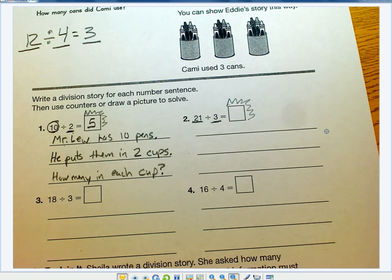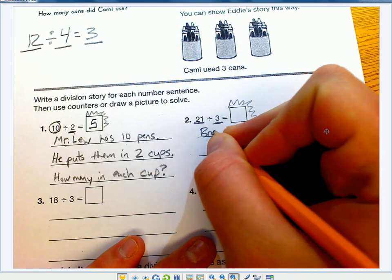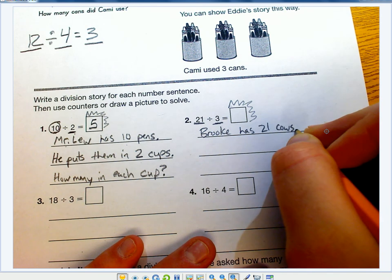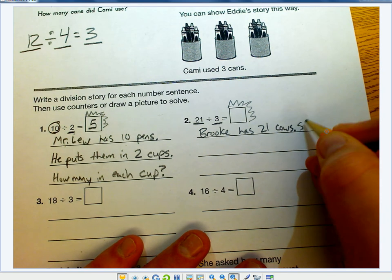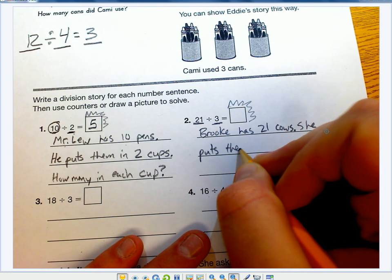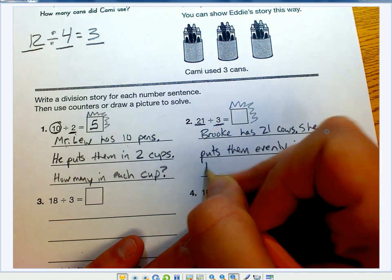Now, Brooke loves her animals, so I'm going to include her on these. Brooke has 21 cows. She puts them evenly in 3 barns.